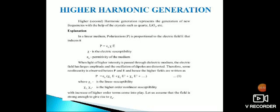In a linear medium, polarization is proportional to the electric field E that induces it: P = ε₀ψE, where ψ is electrical susceptibility and ε₀ is permittivity of free space. When light of higher intensity passes through a dielectric medium, the electric field has large amplitude and the oscillations of dipoles are distorted.